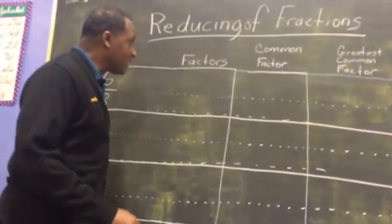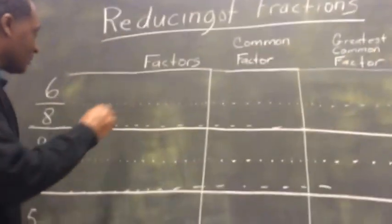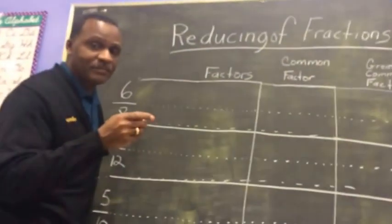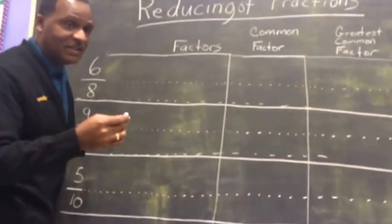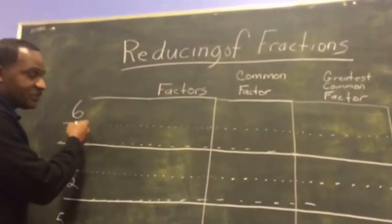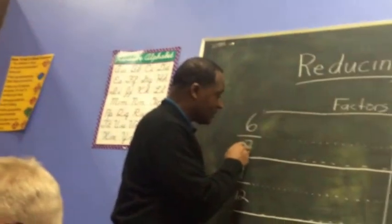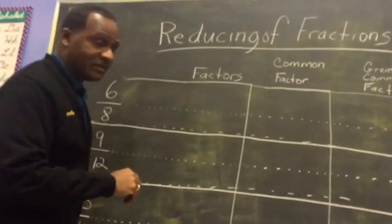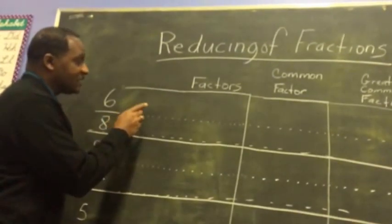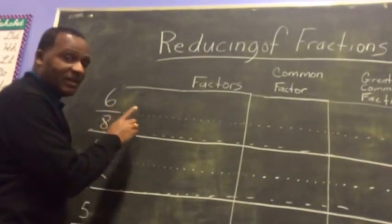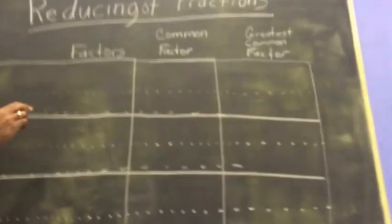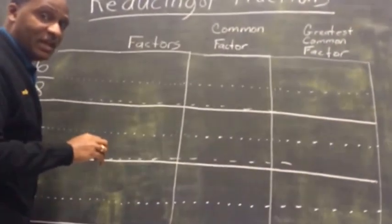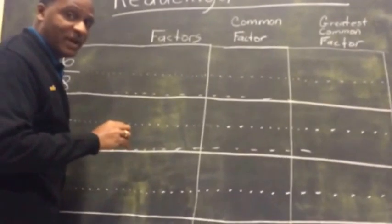When we talk about reducing fractions, we need to know that a fraction is merely just two numbers — a numerator, the top number, and a denominator — that have been multiplied times factors. So let's break the number 6 and the number 8 up and see if there are any numbers that are the same between those two.